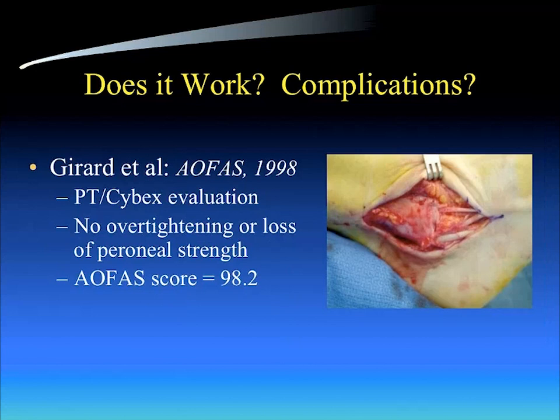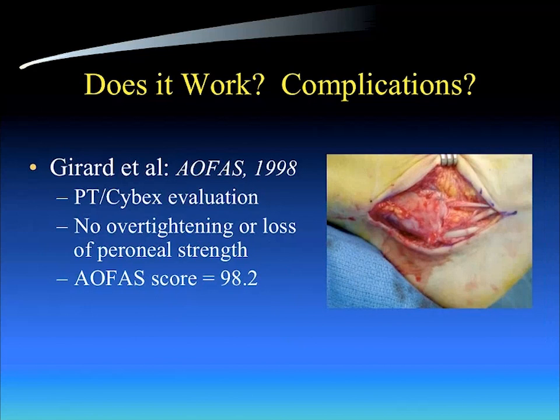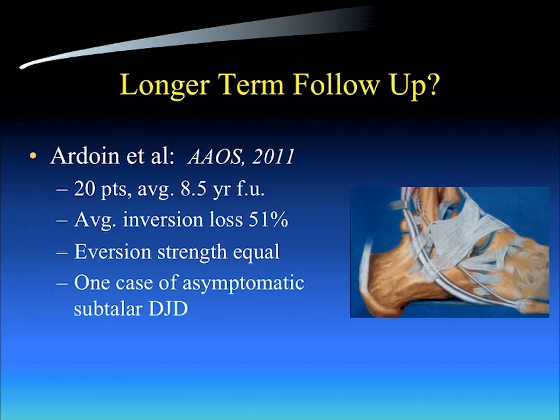Does this procedure work? What are the complications? We've done several series looking at our Brostrum-Split Evans procedure. The first was done by Dr. Pierre Girard back in 1998, presented to the AOFAS. We looked at every patient with physical therapy and Cybex evaluation. In our series, we found no over-tightening, no loss of peroneal strength despite the harvest of the anterior third of the peroneus brevis, and our AAOS score was quite good at 98.2.